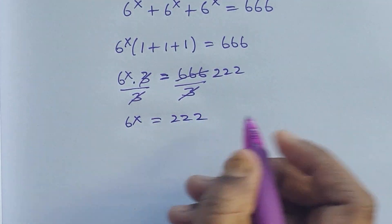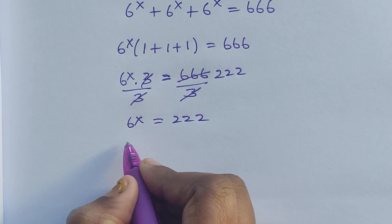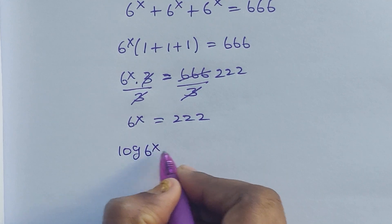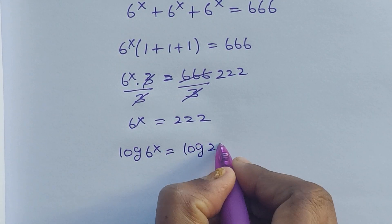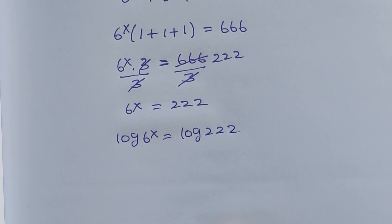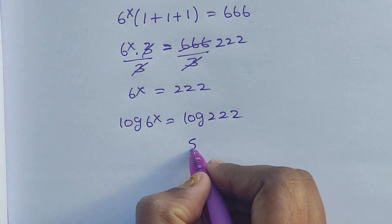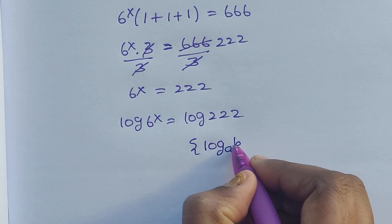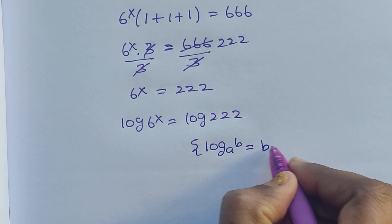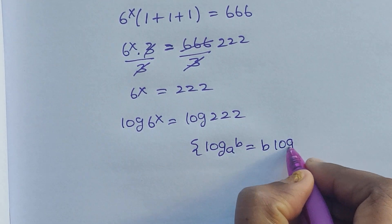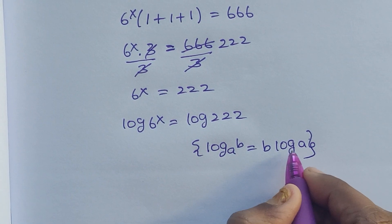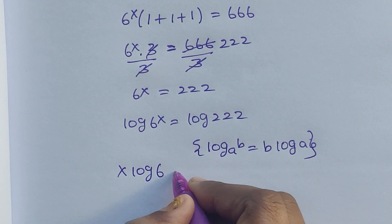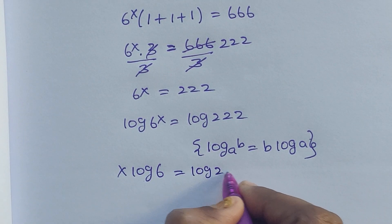Six to the power of x equals 222. Here I'm going to apply logarithm to both sides: log of six to the power of x equals log of 222. Next, I'm going to apply the formula: log a to the power of b equals b times log a. Applying this formula gives us x times log six equals log 222.